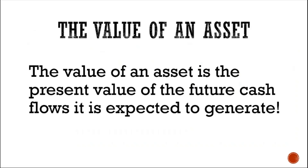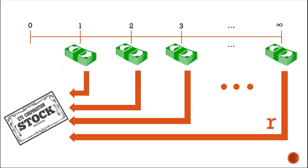Again, the value of an asset is the present value of the future cash flows it is expected to generate. What we just did is called the discounted cash flow or intrinsic value method. Now, what if we do not want to do the dirty work of discounting future cash flows?